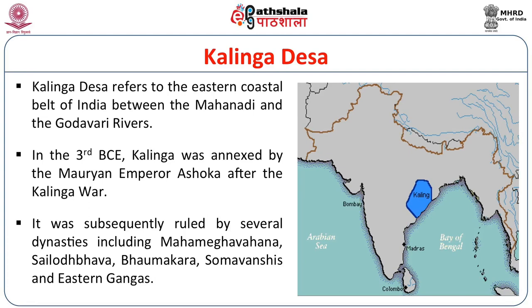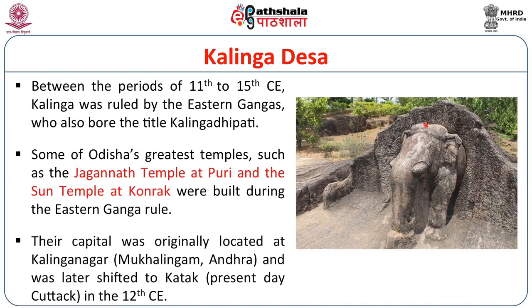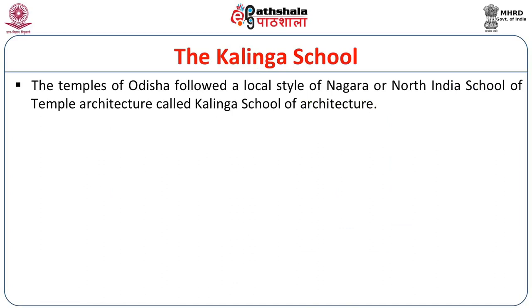Kalinga was subsequently ruled by several dynasties including the Mahamegavahana, Shailodbhava, Bhaumakaras, Somavanshis, Eastern Gangas, and the Gajapathis. Between the 11th and 15th century CE, Kalinga was ruled by the Eastern Gangas, who bore the title of Kalinga Adipati. Some of Odisha's greatest temples — such as the Jagannath Temple at Puri and the Sun Temple at Konark — were built by the Eastern Gangas. Their capital was originally at Kalinga Nagar (Mukhalingam in present-day Andhra Pradesh) and later shifted to Katak in the 12th century CE.